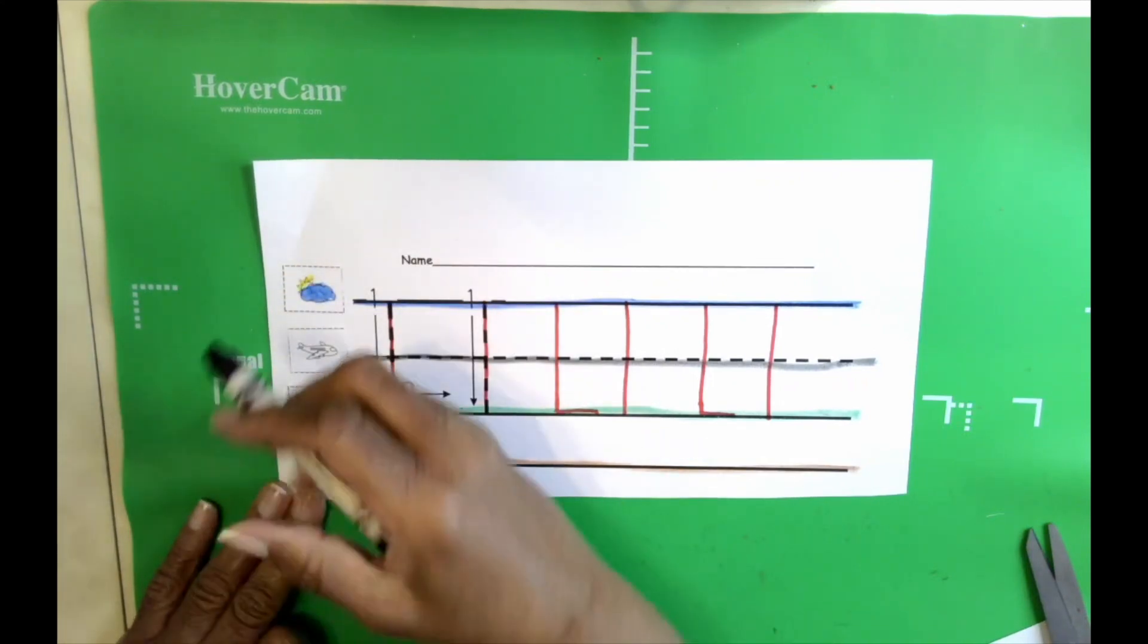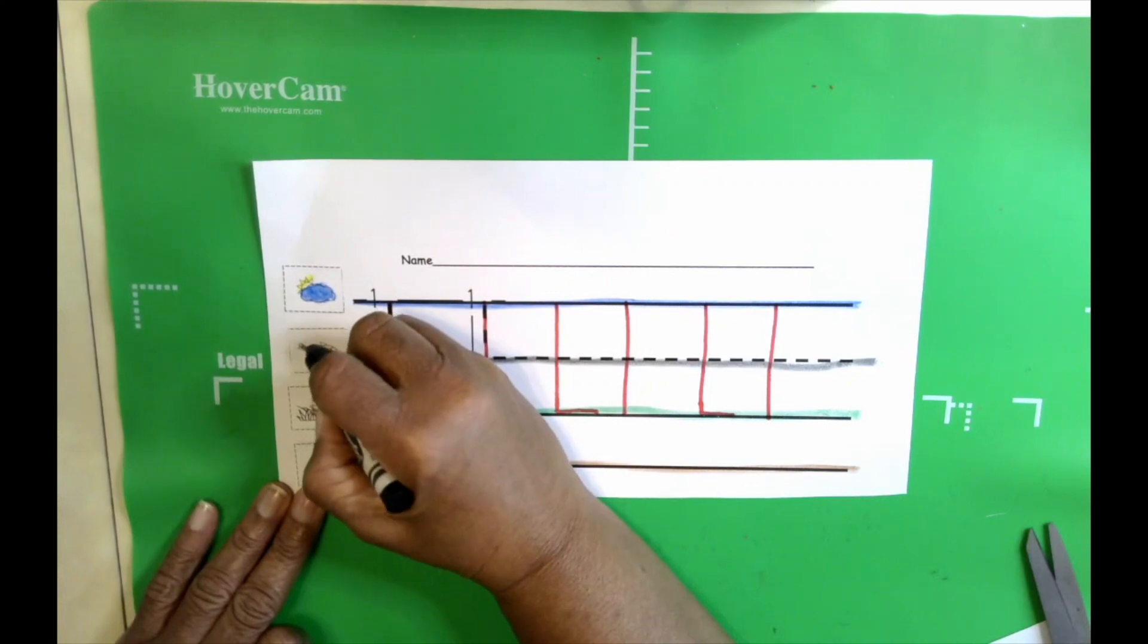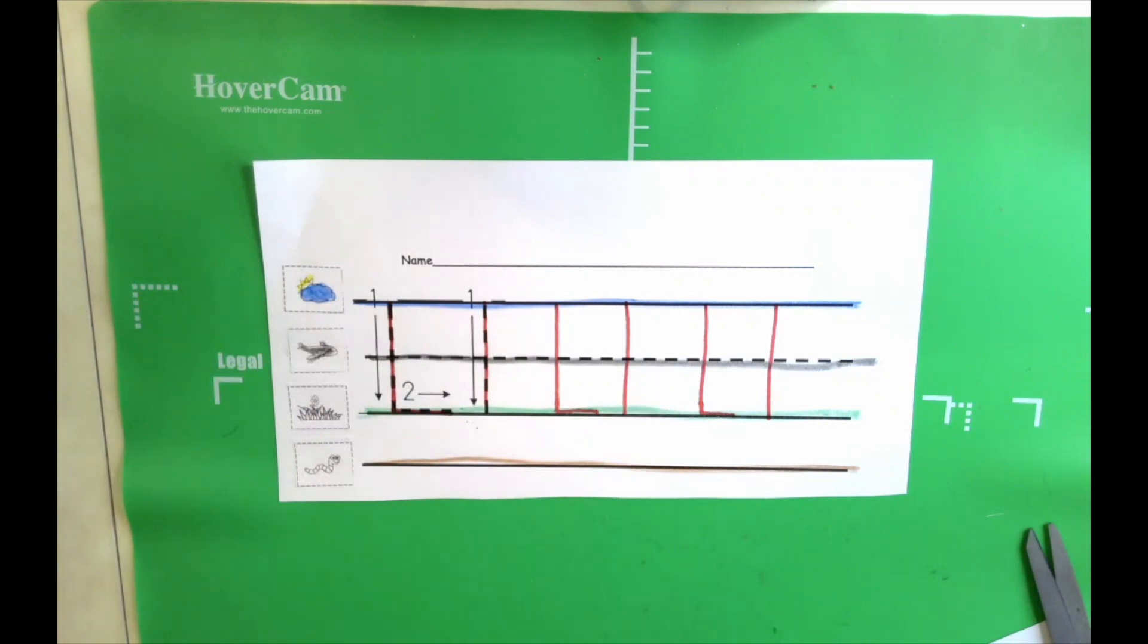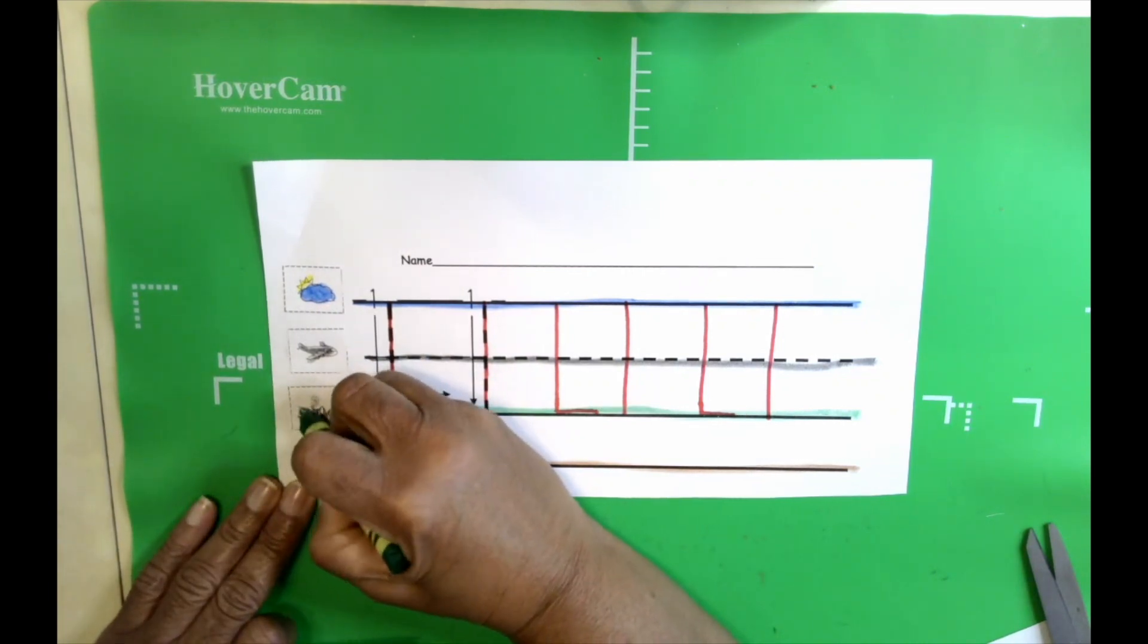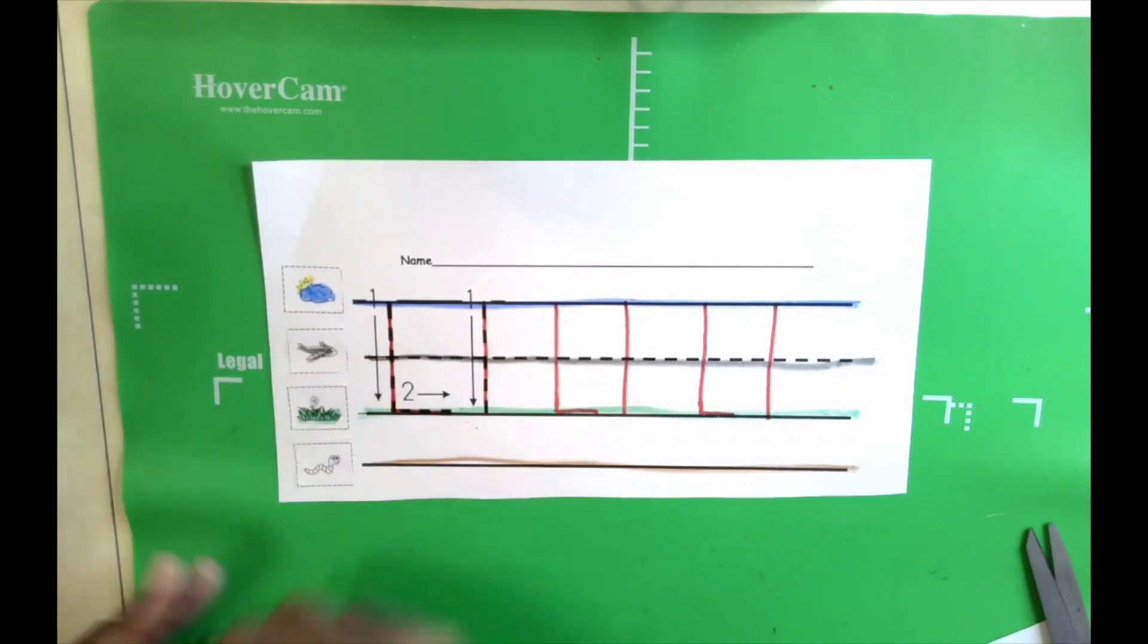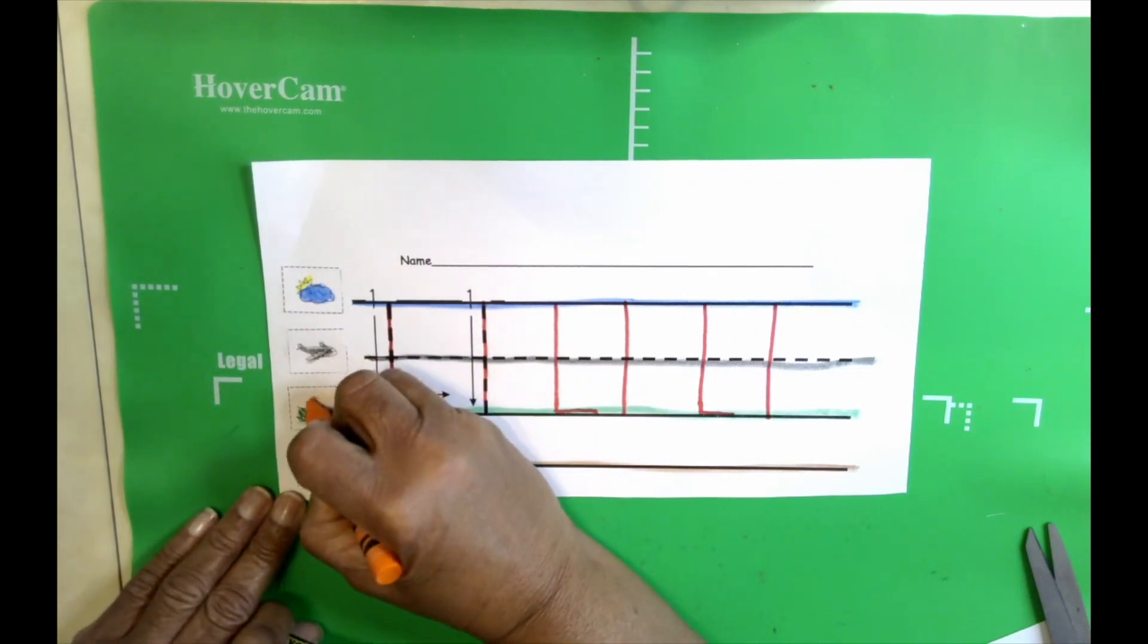The plane line. We're going to color that black. Just like we colored the line. The plane black. The grass is green. And you can color your flower any color that you want.